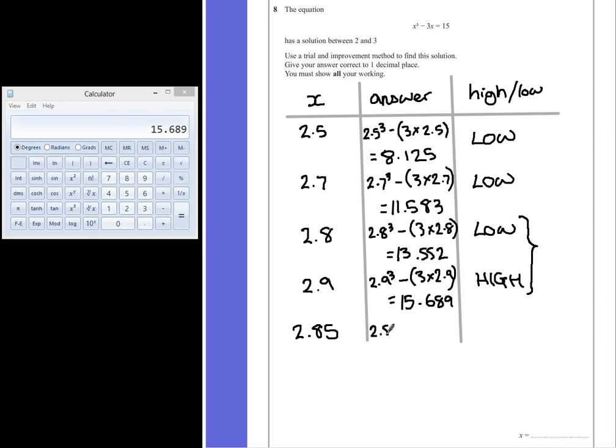So we have 2.85³ - 3 × 2.85. If I put that into the calculator, we have 2.85 cubed subtract 3 times 2.85, close brackets equals 14.599125. Which is too low.